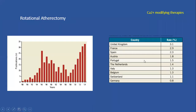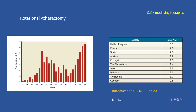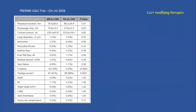Looking at the percentage of rotational atherectomies from all angioplasties — European data — it varies significantly from about 3% in the United Kingdom to 0.8% in Germany. To give perspective on how we're doing: we introduced it in 2019 and use it on average 1.6% per year, so we're in the middle of the pack. Why did we start using it in 2018, and why did the world start again after 2010?